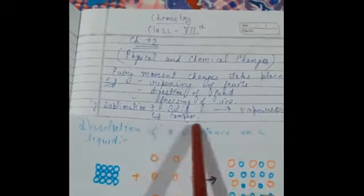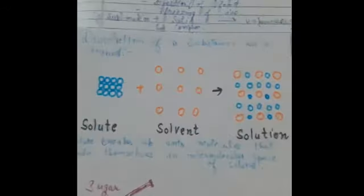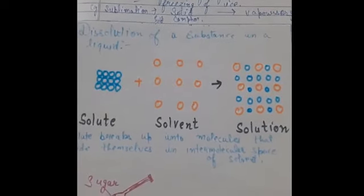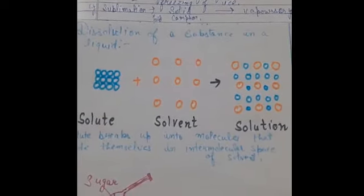The example of sublimation is camphor. Camphor is also known as Kapoor. When you burn camphor, it directly changes from solid to gaseous phase.